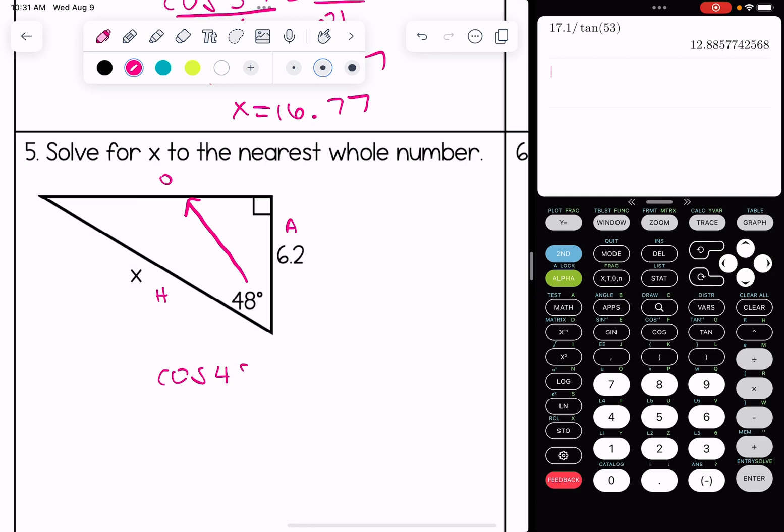x is in the denominator, so I know when I cross multiply, I will also have to divide. So I have 6.2 divided by cosine 48.